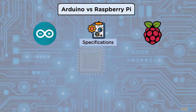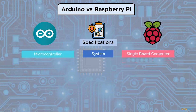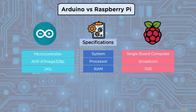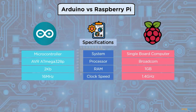Now let us look at the specifications, comparing Arduino Uno R3 and Raspberry Pi 3 Model B+. The Arduino has a microcontroller system while the Raspberry Pi has a single-board computer. The processor in Arduino is the AVR ATmega 328P; in Raspberry Pi it is a Broadcom chip. Arduino Uno has 2 KB of RAM, whereas Raspberry Pi 3 Model B+ has 1 GB RAM. Clock speed is 16 MHz in Arduino and 1.4 GHz in Raspberry Pi.